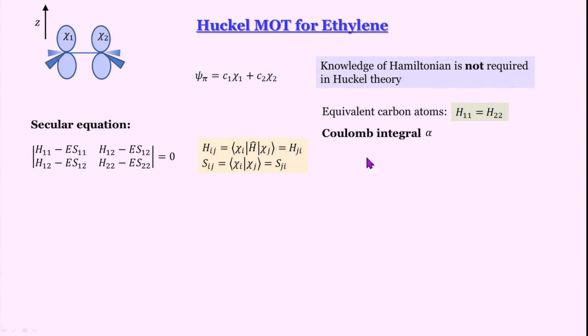Alpha is called the Coulomb integral because it is about the electrostatic interaction of an electron in the joint field of the nuclei and other electrons. So h11 and h22 in the secular equation are both written as alpha. We are left with h12, s11, and s12 to deal with.